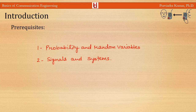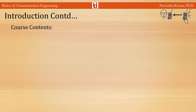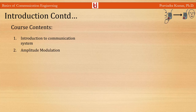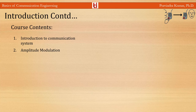This course has six different units. In the first unit, introduction to communication systems, we will discuss the evolution of communication systems, elements of communication systems, types of communication systems, and different applications. In the second unit, amplitude modulation, we will discuss the equation of an amplitude modulated signal, modulation index, efficiency of amplitude modulating systems, generation and demodulation of amplitude modulated signals, and different types of amplitude modulated receivers.